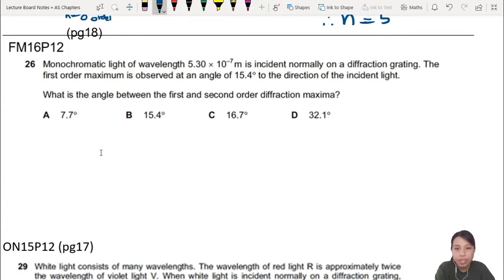Monochromatic light is incident on the diffraction grating. First order maximum observed at an angle to the incident. Wow, this one looks easy but got a trick. Small trick question.